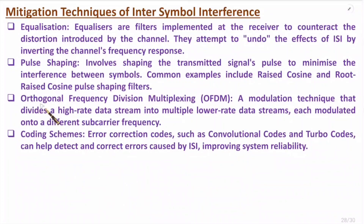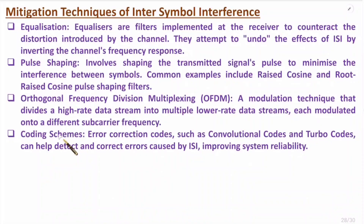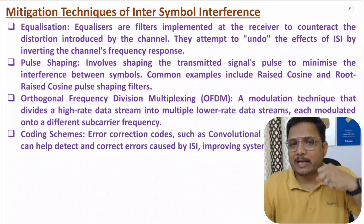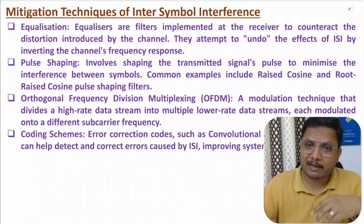The second technique is pulse shaping, where we shape the transmitted pulse to minimize interference between symbols. Common examples include raised cosine and root raised cosine pulse shaping filters. The third technique is OFDM — orthogonal frequency division multiplexing — where a high-rate data stream is divided into multiple lower-rate streams, each modulated onto different orthogonal sub-carrier frequencies. Finally, coding schemes such as convolutional codes and turbo codes help detect and correct errors caused by ISI, improving system reliability.